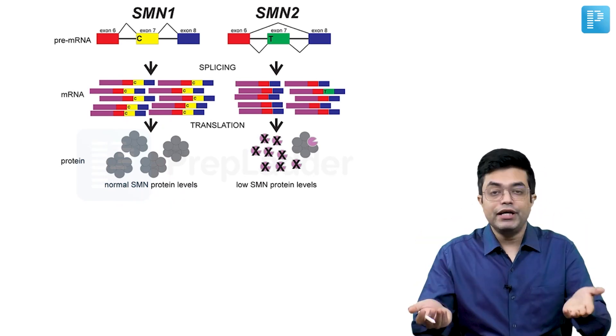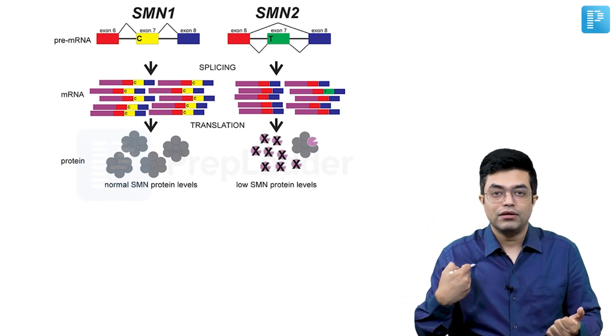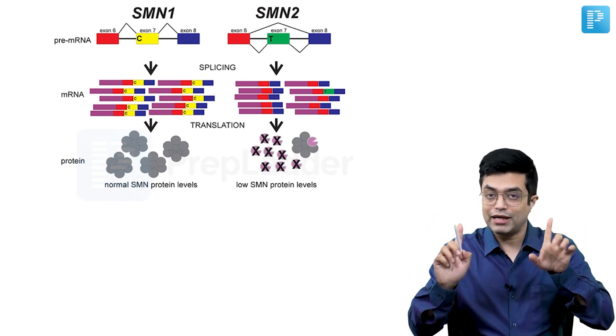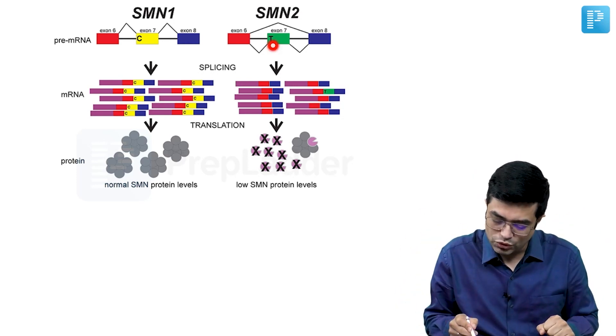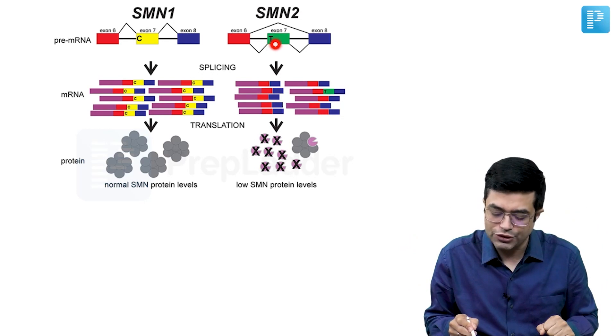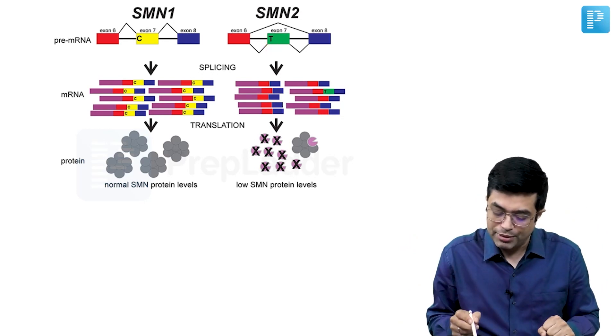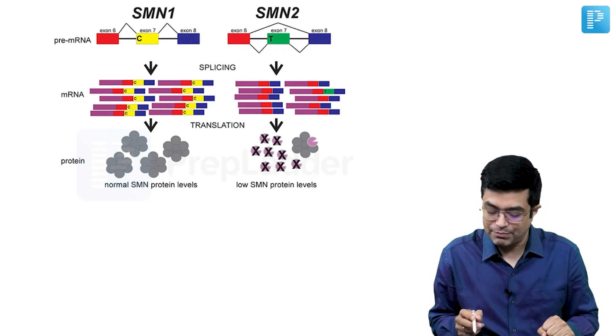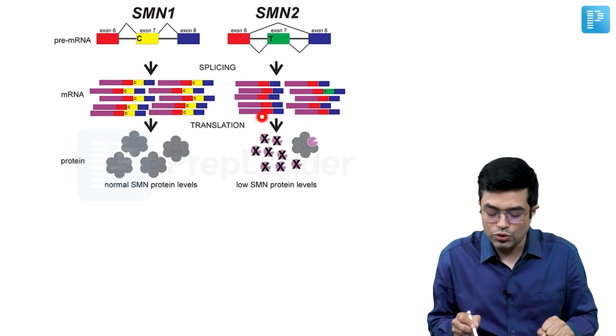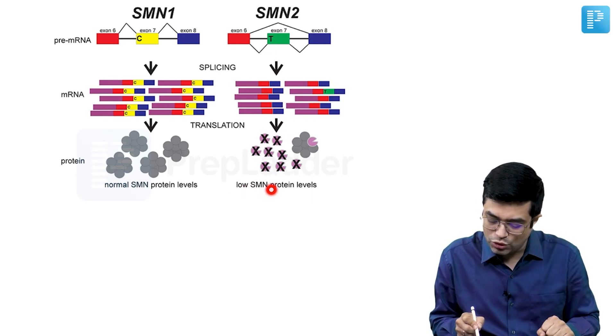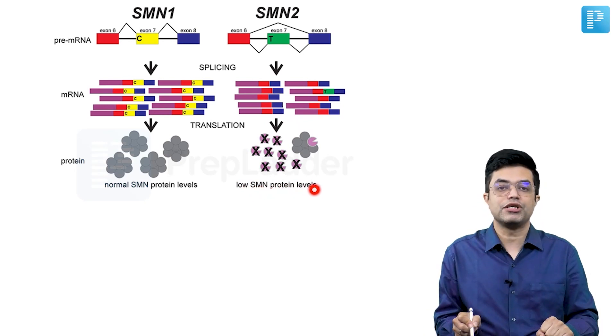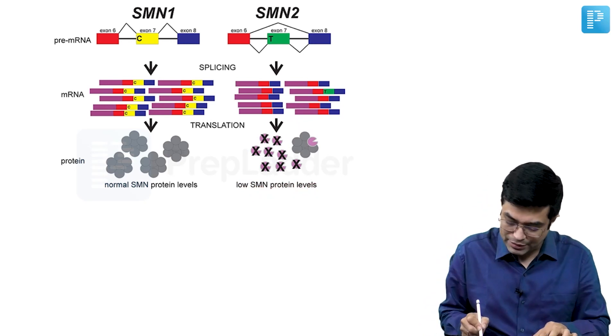In SMN2, in every individual, you and me as well, this is what is happening in normal person. I'm talking about normal, not disease. In SMN2, in normal person, you will find that there is thiamine residue on exon 7. Because of this, when splicing happens, there is an unstable protein which is formed. Because of this unstable protein, very low SMN protein levels, this unstable mRNA, there are very low SMN protein levels which are formed.